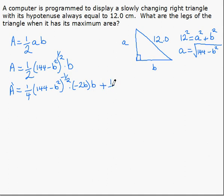Plus we'll keep the first, which is one-half, 144 minus B squared, and the derivative of the second is 1.